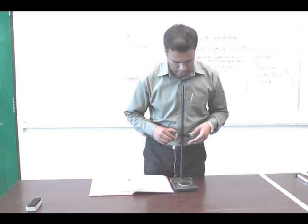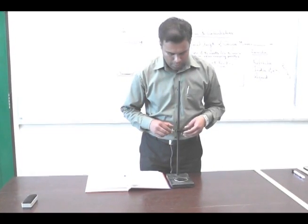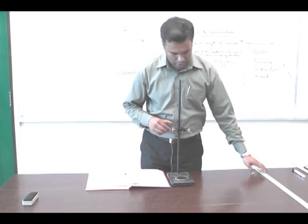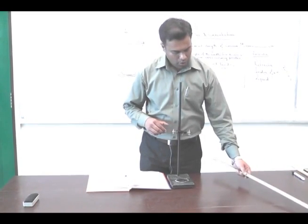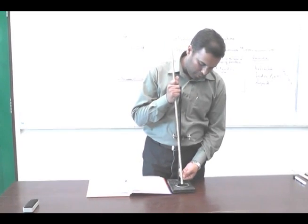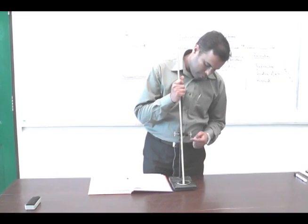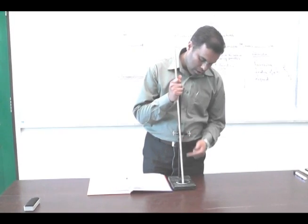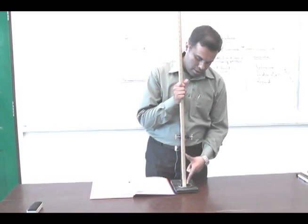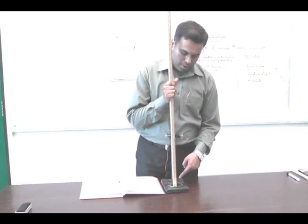The image and the needle should move together — with no relative shift — when you move your head side to side. This is how we remove the parallax. Once done, we use a plumb line or meter rod, placing its tip at the center of the mirror surface, and measure the vertical distance from the needle tip to the mirror surface. This vertical distance is the height of the needle from the surface of the mirror without water.